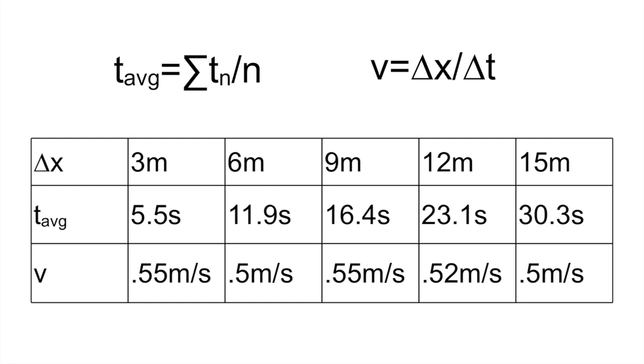Velocity must also be recorded. This can be found by taking the distance and dividing by average time. The velocity is approximately 0.5 meters per second at each point.